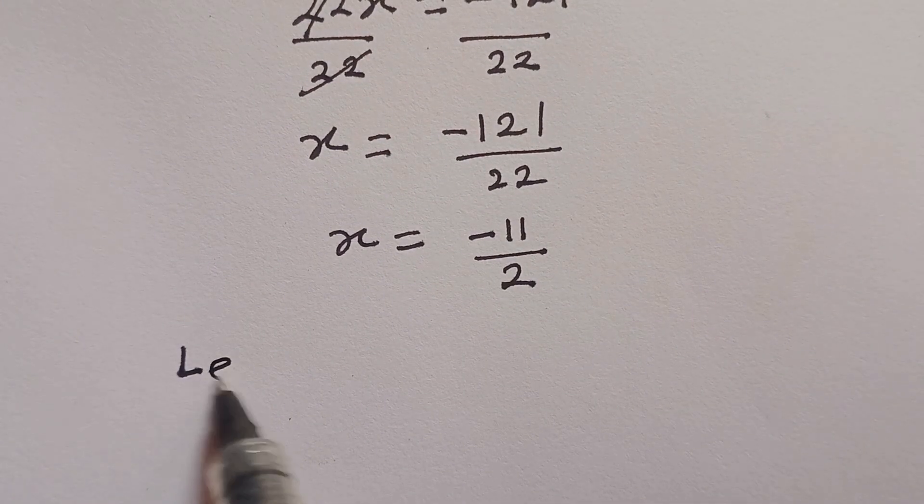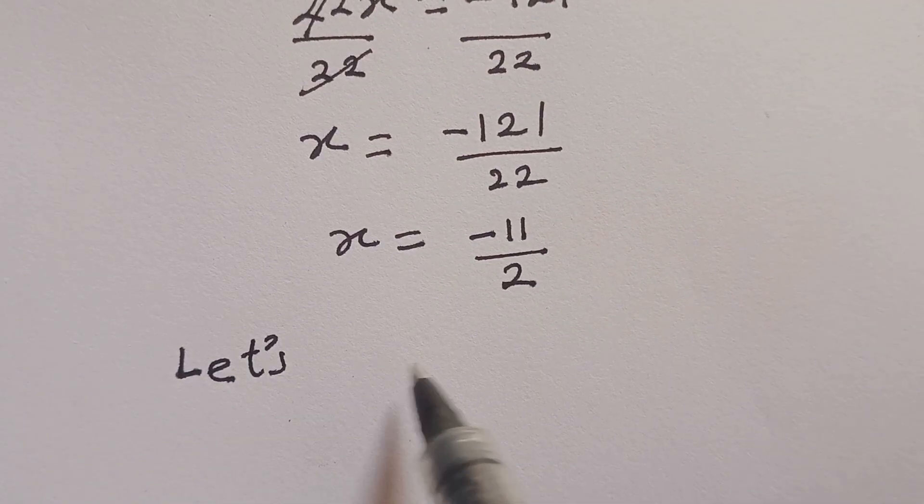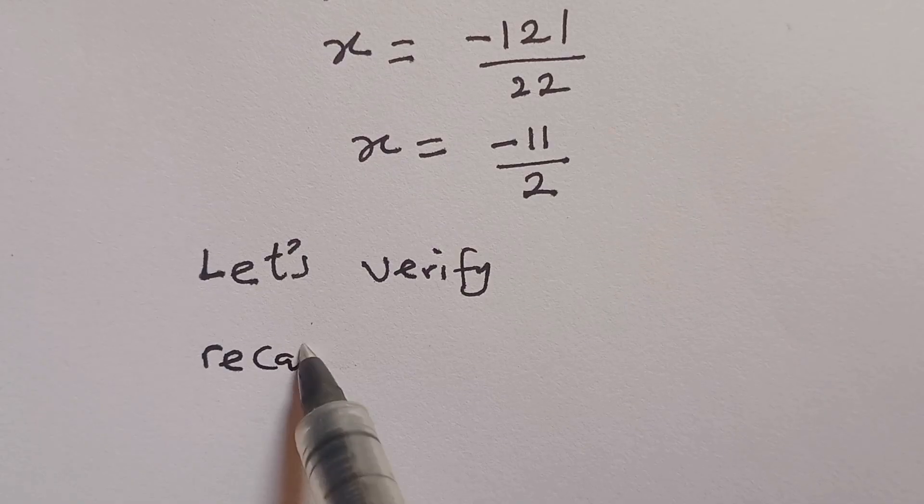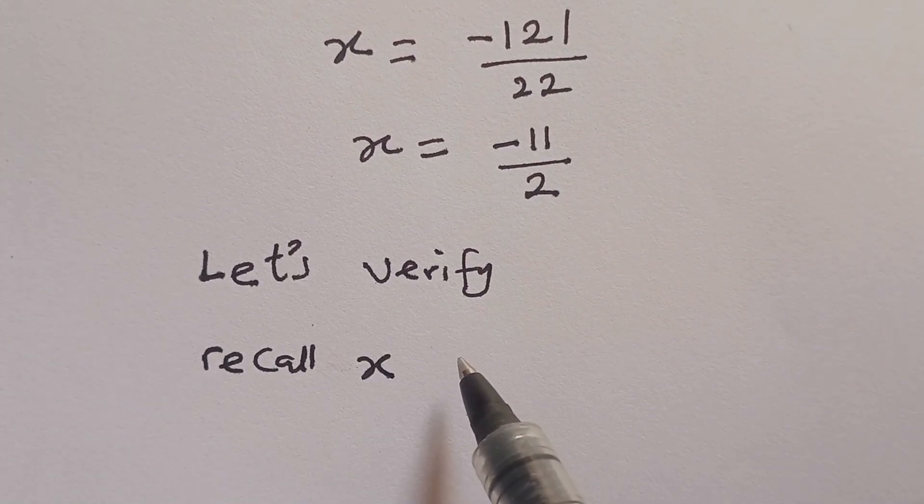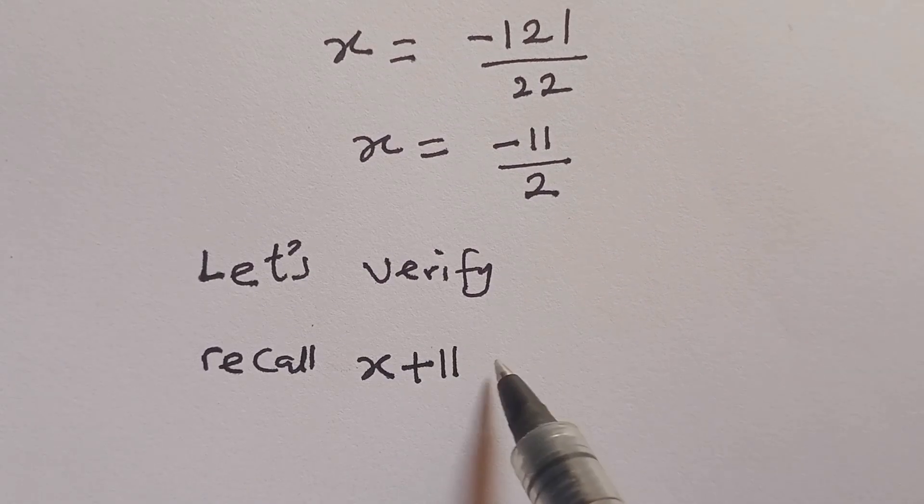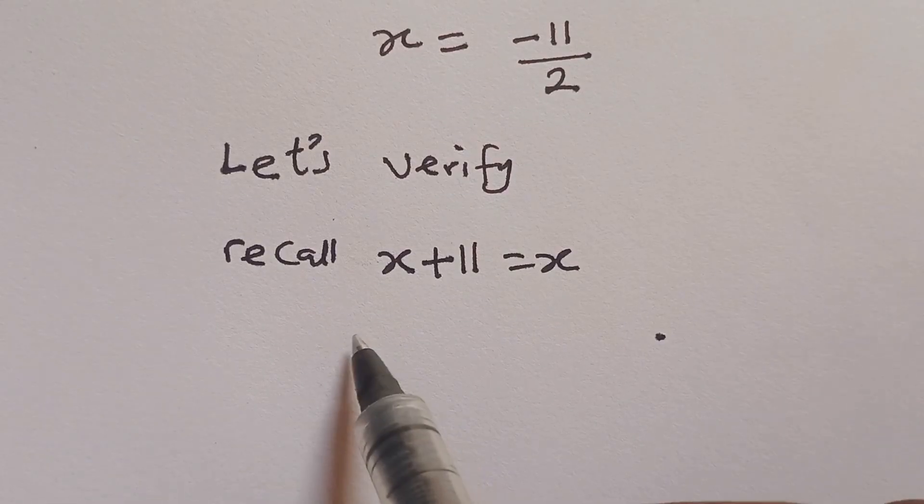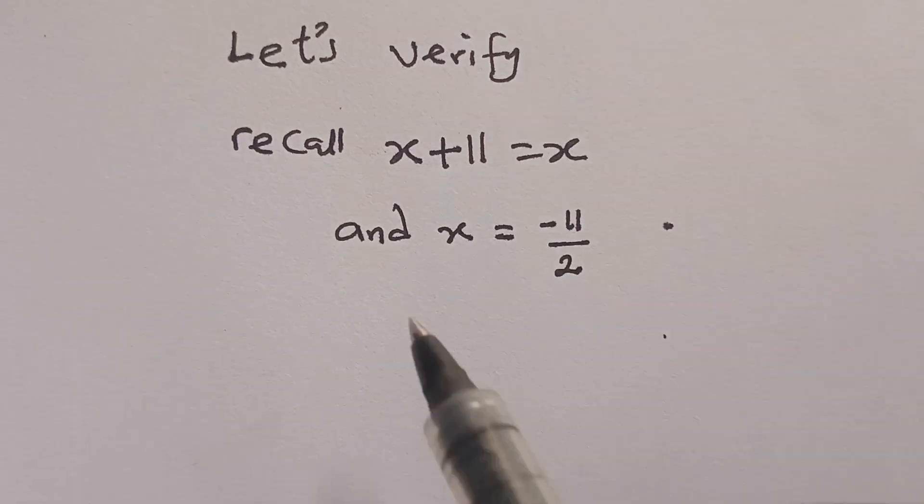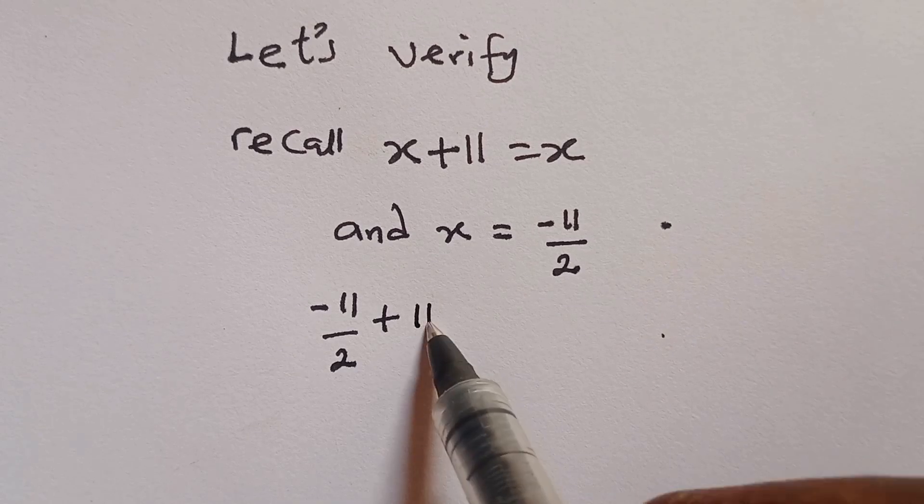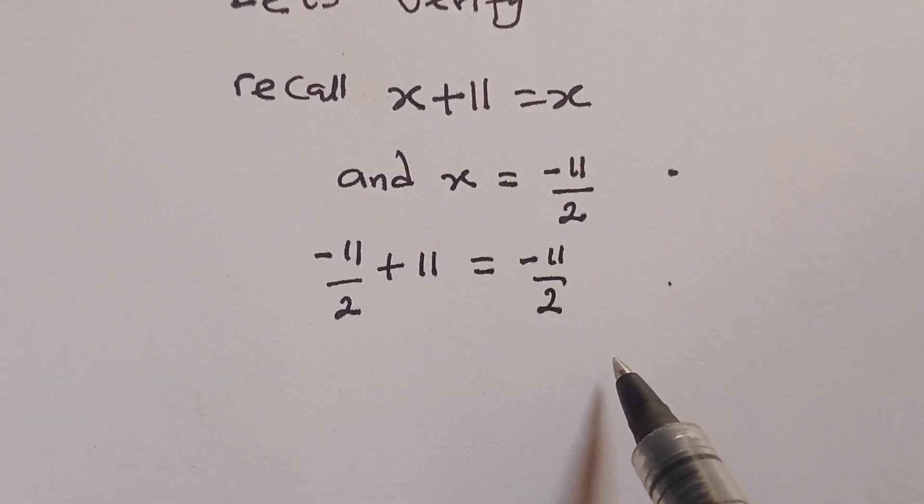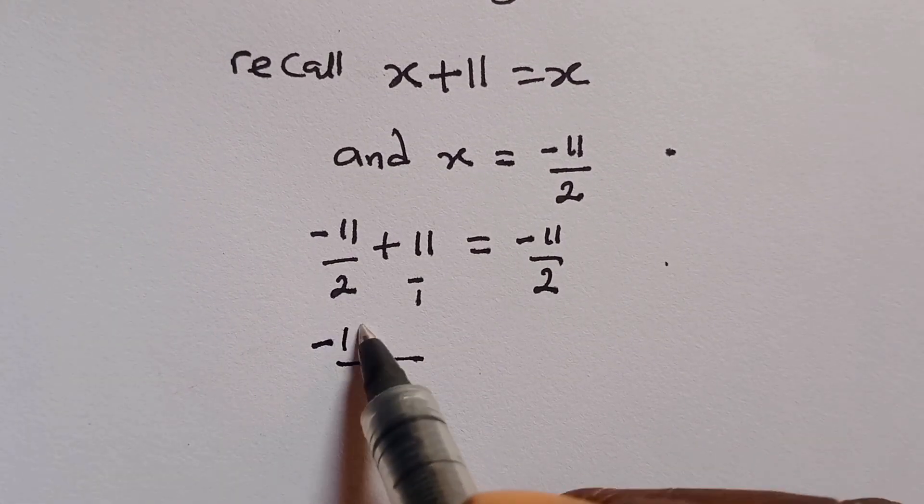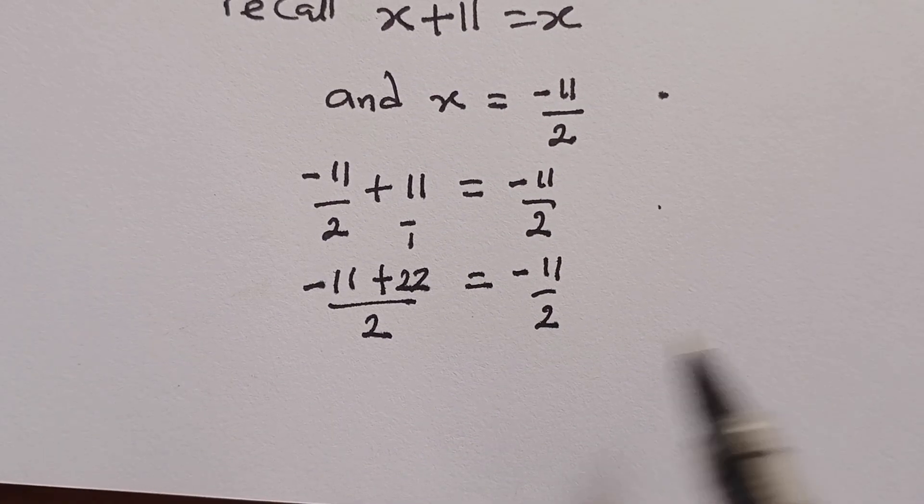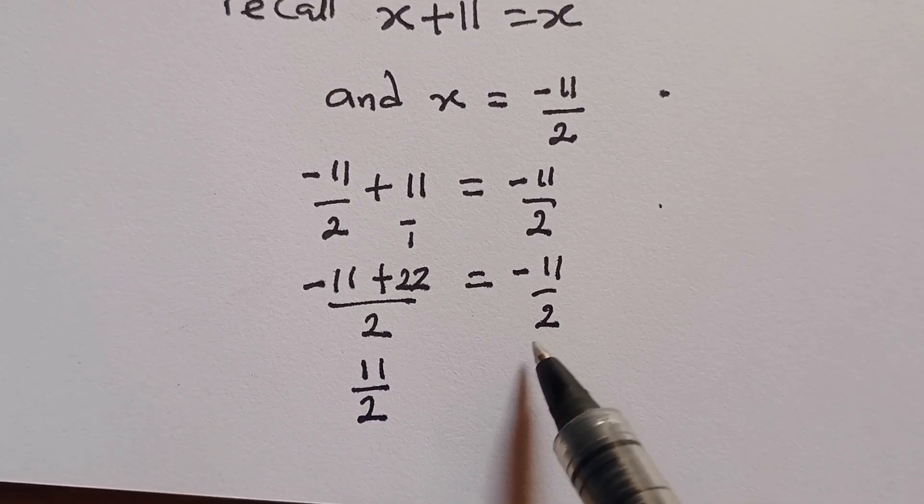Now let's do some verification to know if our answer is correct. Don't forget we get the value of x to be equal to minus 11 over 2 and the equation given is x plus 11 to be equal to x. So let's substitute for the value of x. Minus 11 over 2 plus 11. Let's take LCM. We have 11 over 2 which is not equal to minus 11 over 2.